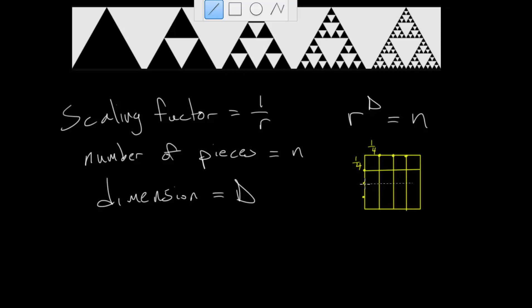If we use our equation, we can see that the equation makes sense. We take our scaling factor, which is 1 over 4, to find the r value, and in this case, r would be 4, and we know this is a square, so its dimension is 2.